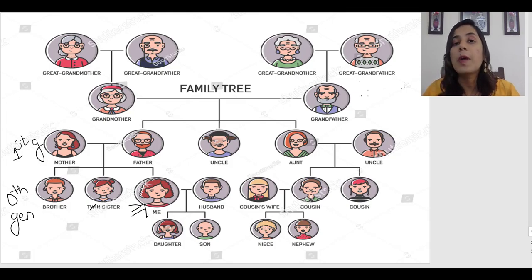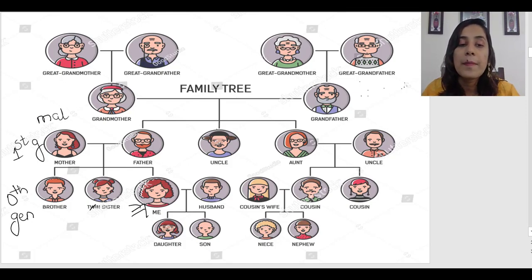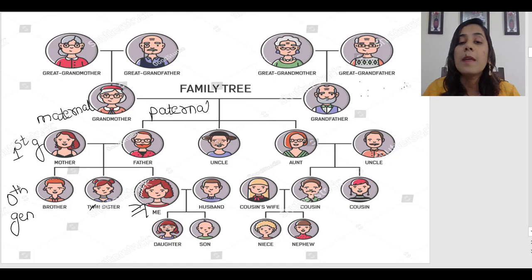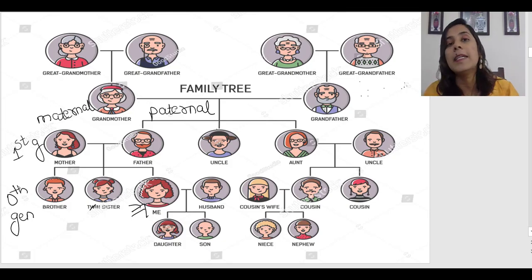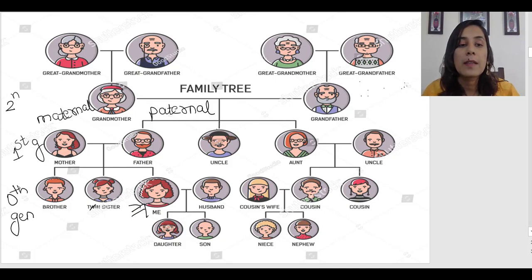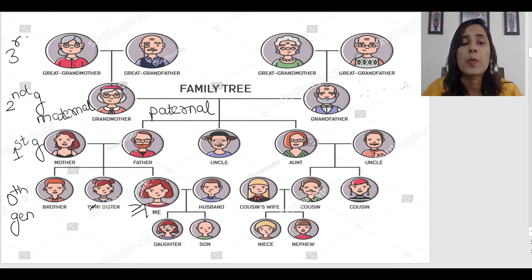Similarly, my mother also has a mother and a father, and they are also called grandparents. But my mother's side is called maternal and my father's side is called paternal. So when I speak about my father's father, he is my paternal grandfather, and my mother's mother is my maternal grandmother. Anything related to my mother's relatives is called maternal, and my father's side is paternal. Grandparents are the second generation. Their parents — my great-grandparents — are the third generation and so on.